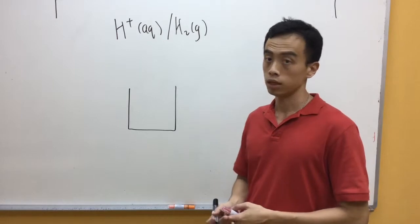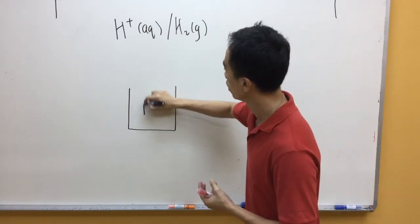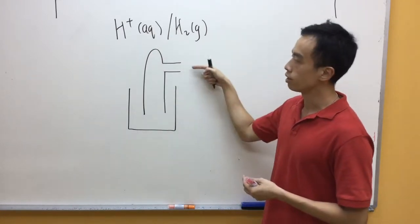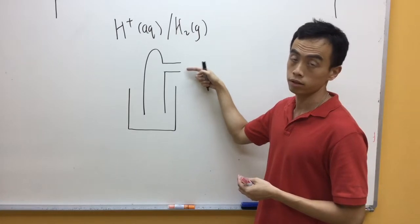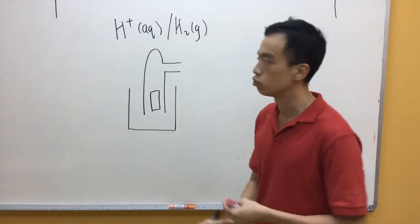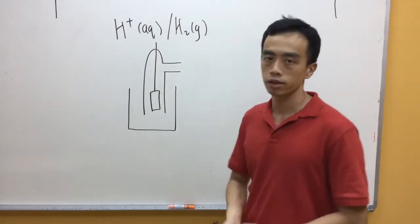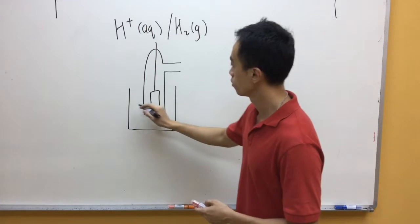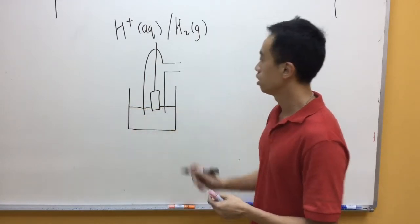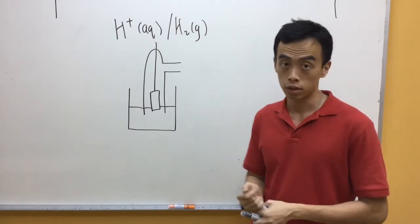Again we draw the beaker, and then we have to draw the chamber to hold the gas. So this opening is where the gas will enter the electrode. Then we have to draw the electrode, and then the wire sticking out of the electrode.